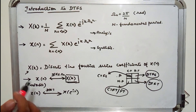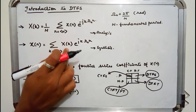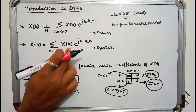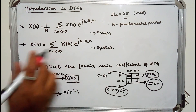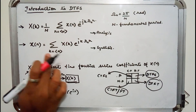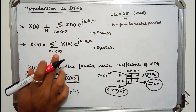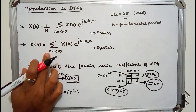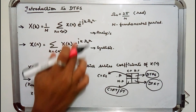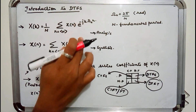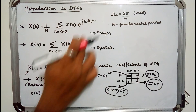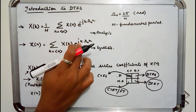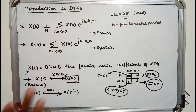The synthesis equation is used to recover x of n back from the discrete time Fourier series coefficients. It is given by the summation over N, with index k, of x of k times e power j k omega-naught n.